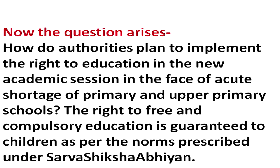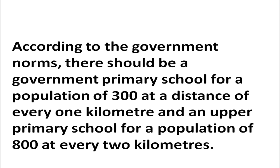The right of free and compulsory education is guaranteed to children as per the norms prescribed under the SSA scheme. According to government norms, there should be a government primary school for a population of 300 at a distance of every one kilometer, and an upper primary school for a population of 800 at every two kilometers. Within a radius of 1 kilometer there should be one school, and within a radius of 2 kilometers there should be a school where the population is more than 300.